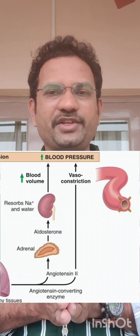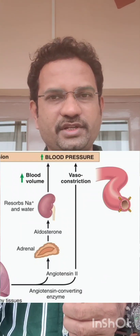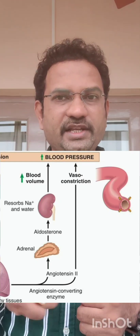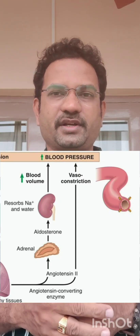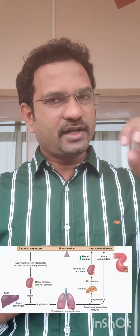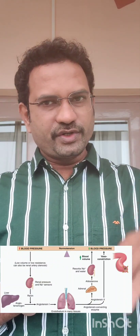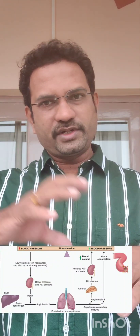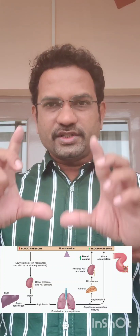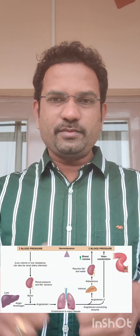So the two functions of angiotensin 2 are: causing vasoconstriction and increasing blood volume — both of which increase blood pressure. All of this is triggered by the signal of low blood pressure. Low blood pressure is sensed by the kidney, which releases renin; renin acts on angiotensinogen, converting it to angiotensin 1, which is then converted to angiotensin 2.